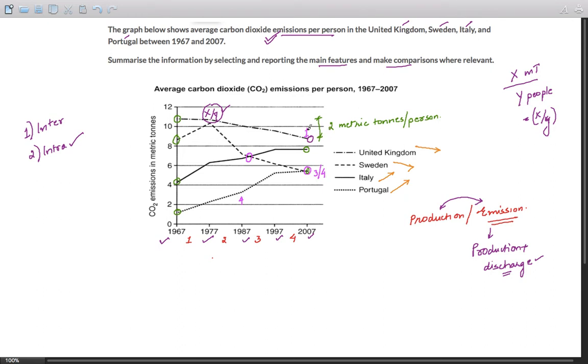And you can see, for instance, a two metric ton per person fall during the four decades. Similarly, you can see that Portugal increased by about five folds. So that's the increase here. It almost doubled from a little above four to a little less than eight for Italy. That's the intra picture.